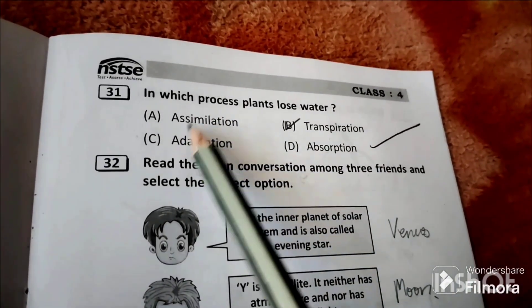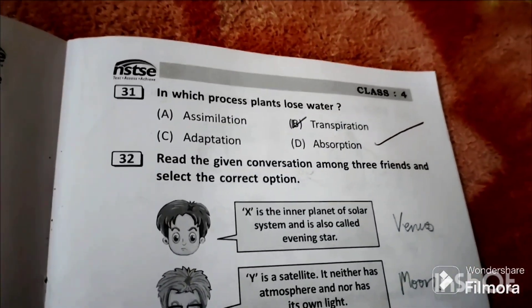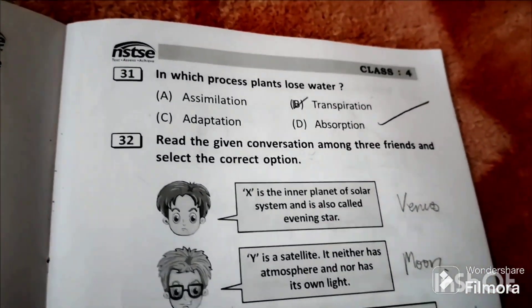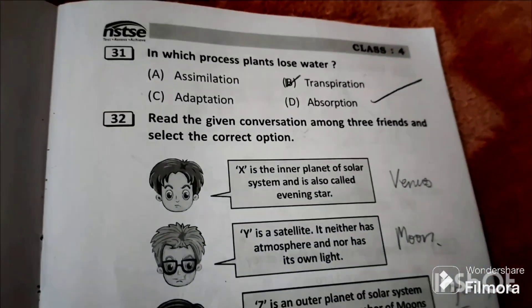Question 31: In which process do plants lose water? Plants lose water by transpiration. Transpiration is loss of water through its leaves. So option B, transpiration.